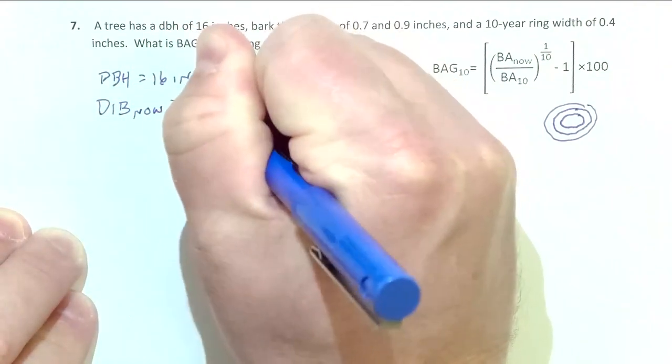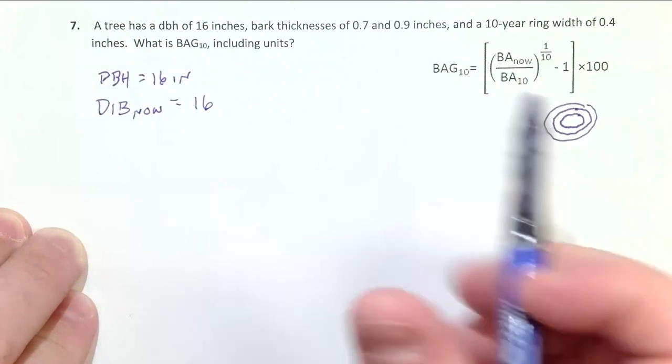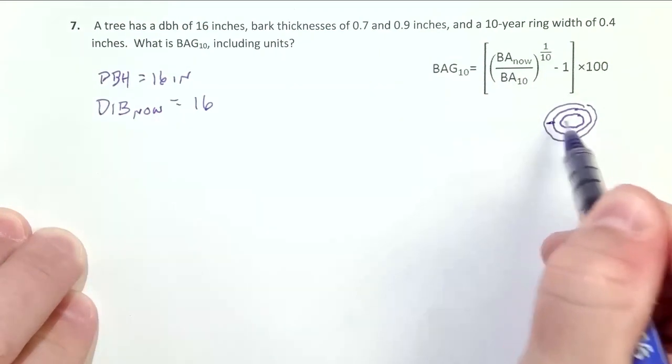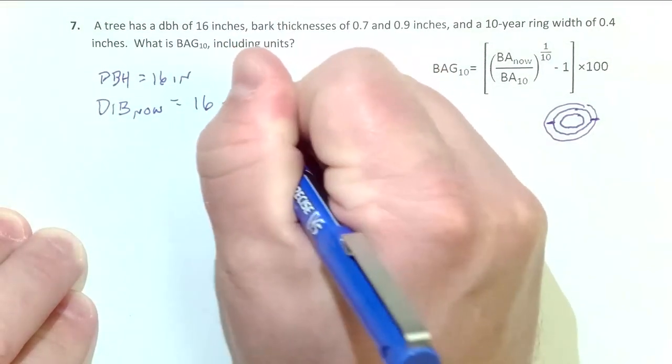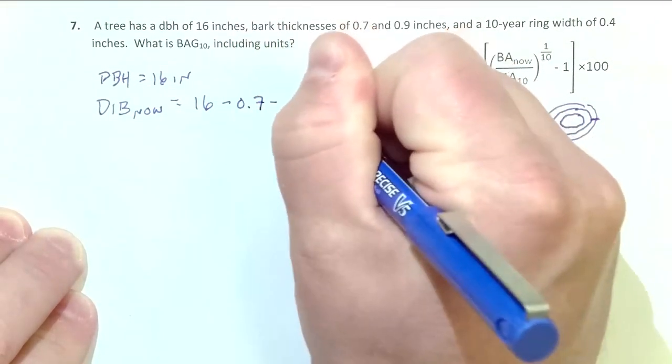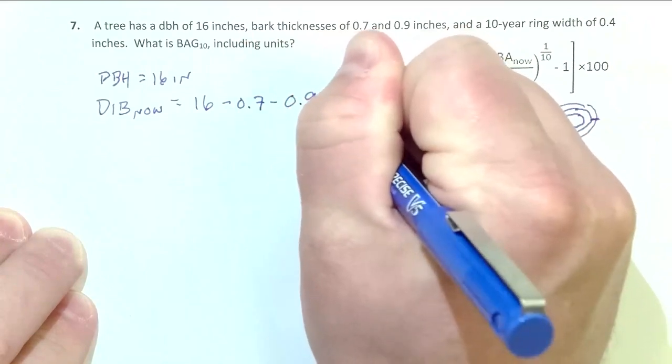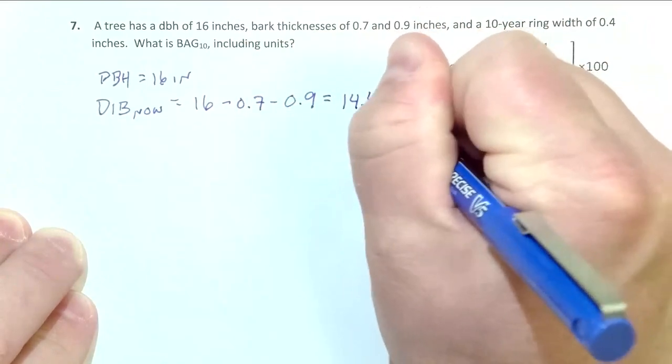So that's equal to our DBH, 16, minus both bark thicknesses because we have to remove the bark there and there to get diameter inside the bark now. So minus 0.7 minus 0.9 equals 14.4 inches.